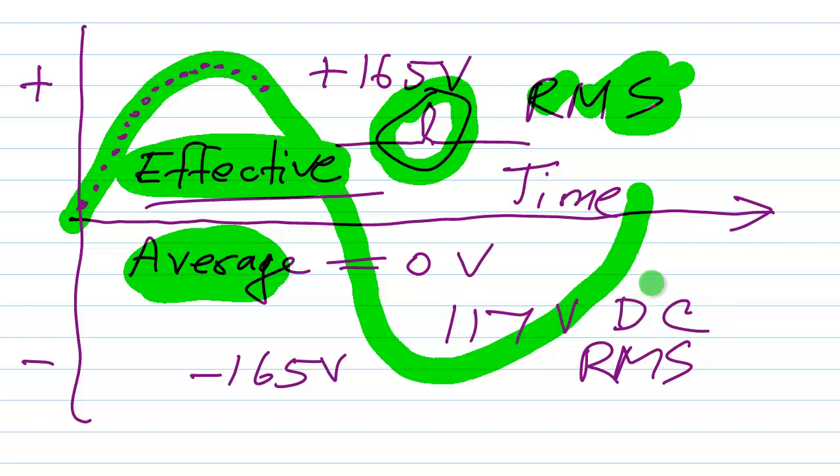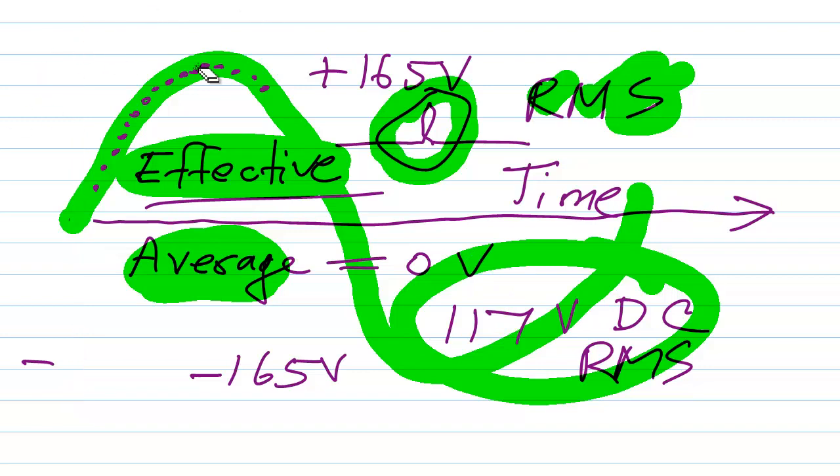117 volts RMS, if you get that through your chest cavity, can, if you allow the current that that voltage can produce to flow through your chest cavity, cause your heart to go into something they call atrial fibrillation.